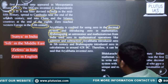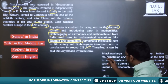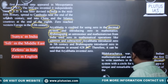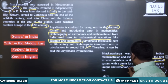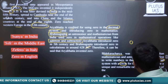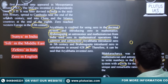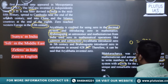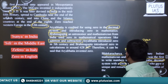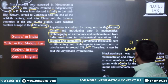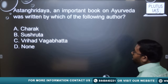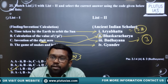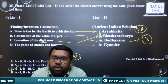Bhaskaracharya, a seventh century mathematician, was the first to write numbers in the Hindu-Arabic decimal system with a circle symbol for zero. This digit zero represented by a circle was first used by Bhaskaracharya — also called Bhaskar I to distinguish him from the 12th century Bhaskar II. So in summary: zero was introduced by Aryabhata, first used in calculations by Brahmagupta, and the digit zero as a symbol was invented by Bhaskaracharya.